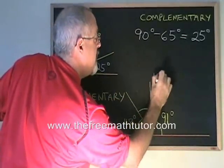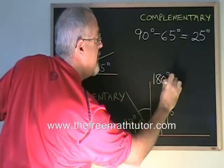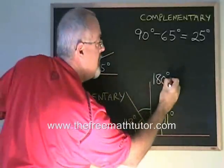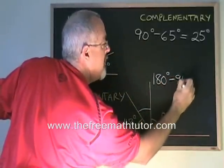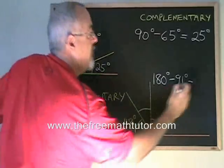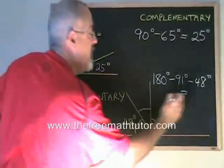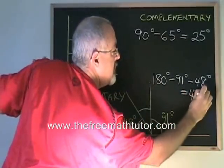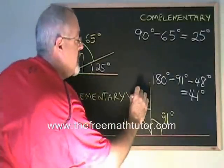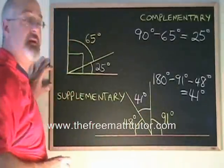We take 180 degrees and we subtract both 91 degrees and 48 degrees and our answer will be 41 degrees, and that is the measure of the missing angle using the supplementary rule.